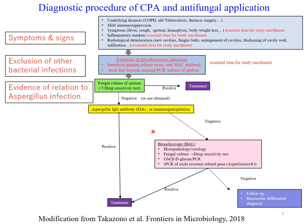Then we exclude the possibility of other bacterial infections as much as possible. Next, we take some evidence of relation to aspergillus infection. If aspergillus is cultured, we take it as a confirmed case. Aspergillus antibodies are trustable alternatives. In case of no culture, no antibody, we usually measure galactomannan, and even if there is nothing, we will perform bronchoscopy to see a fungal culture, histopathology, or galactomannans.